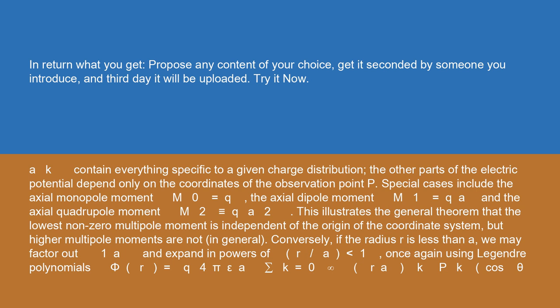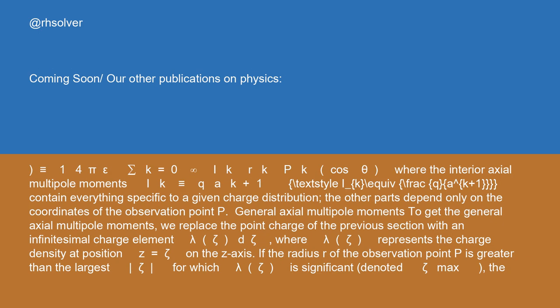Conversely, if the radius R is less than a, we may factor out 1/a and expand in powers of R/a using Legendre polynomials: φ(R) = Q/(4πεa) × Σ(k=0 to ∞) (R/a)^k P_k(cosθ), where the interior axial multipole moments I_k ≡ Q/a^(k+1) contain everything specific to a given charge distribution.